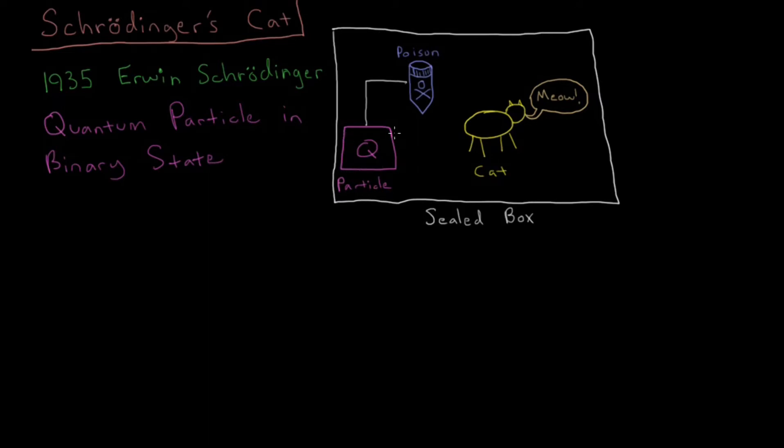So we've got this particle in here, and it's in some little box there. And then we have some detector which measures the state of this particle, and it either is or isn't decayed at whatever point in time. And then if it is decayed, it is connected to a vial of poison here. And whenever the particle decays, this vial of poison is going to break open, and it is going to kill anything inside of this bigger sealed box.